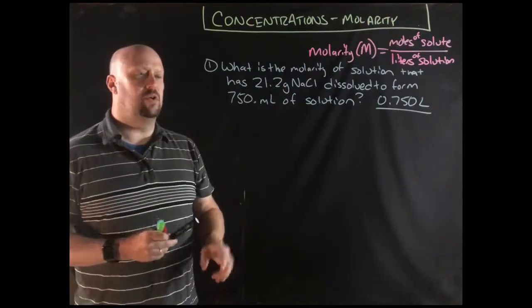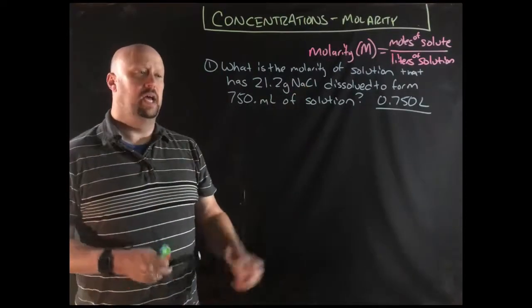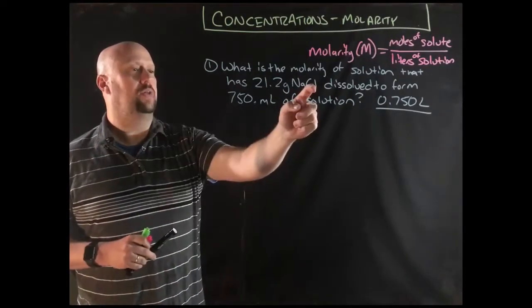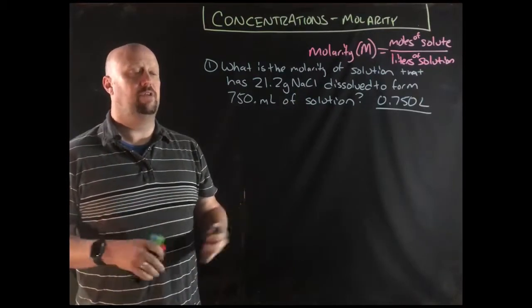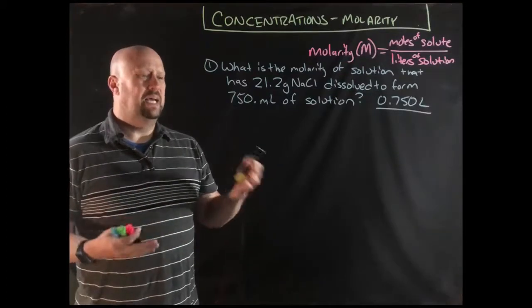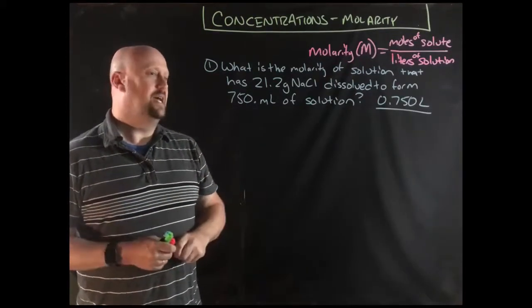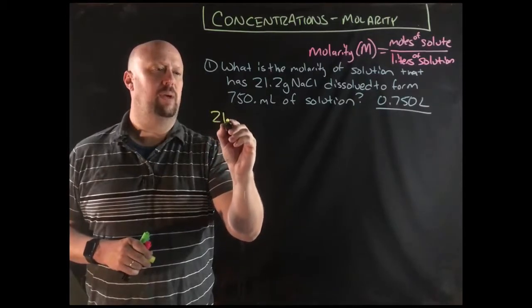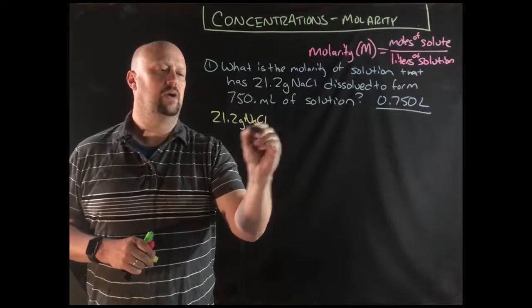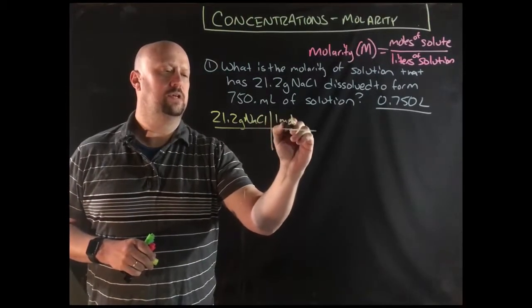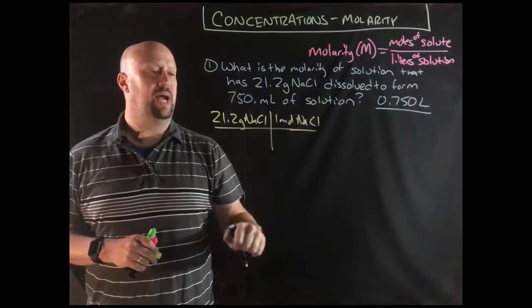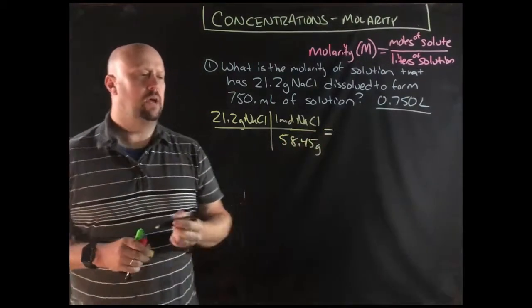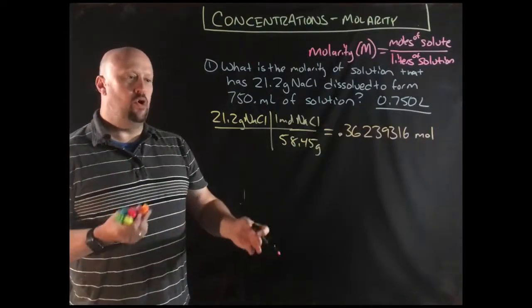To convert grams into moles, we need to know the molar mass of sodium chloride. We would pull up our periodic table. We would see that sodium has a mass of 23.0 grams per mole and that chlorine has a mass of 35.45 or 35.5. So I'm going to do a quick molar mass conversion to turn my grams of sodium chloride into moles. One mole of sodium chloride is 58.45 grams.